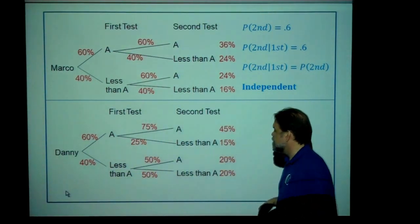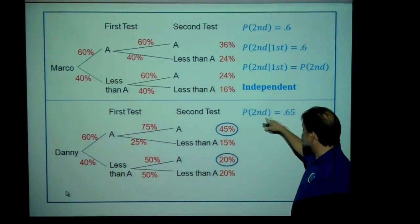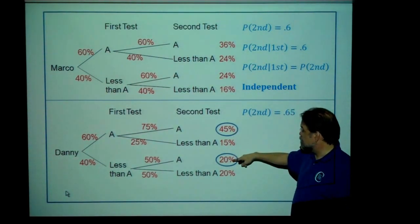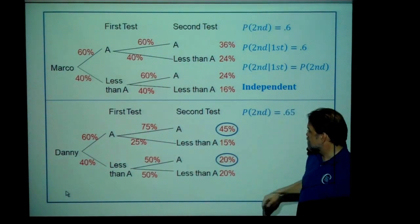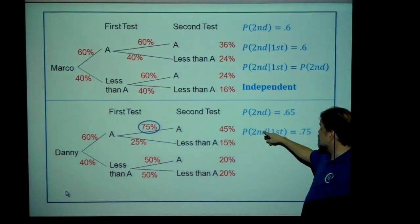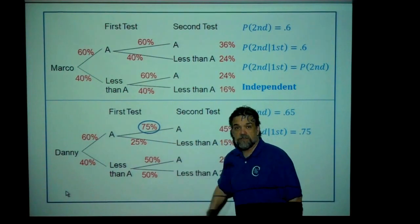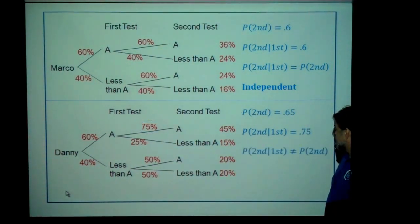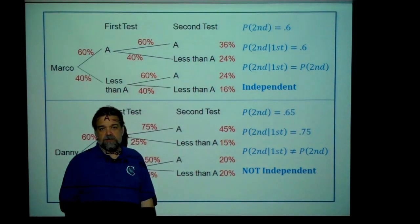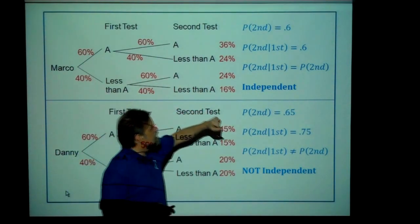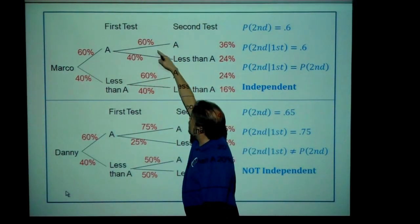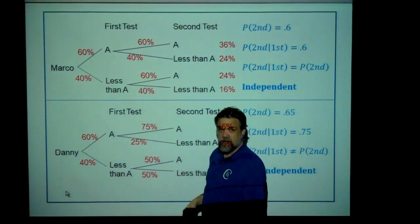Danny, a little more emotional. The probability of Danny making an A on the second test is 65%. There are the 45% and the 20%, the two branches where he's making an A on the second test. These are disjoint events, so we can just add up the probabilities. The probability that he made an A on the second test assuming he made an A on the first test, though, is 75% — it's right there. 65% versus 75%: not the same thing. Therefore, these events are not independent. That's a really easy way to tell if events are independent: draw a little tree and show whether the unconditional probability is the same as the conditional probability. Another easy way on a tree is just to look at the branches — are they the same? Yes, they're independent. Are they different? Then they're not independent.